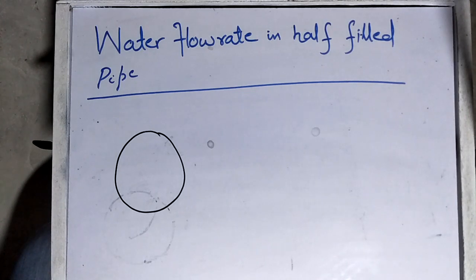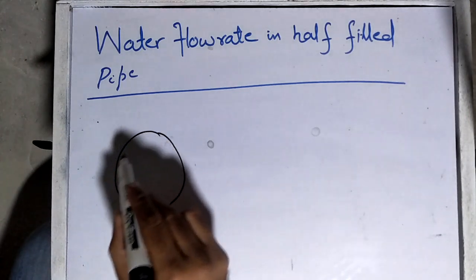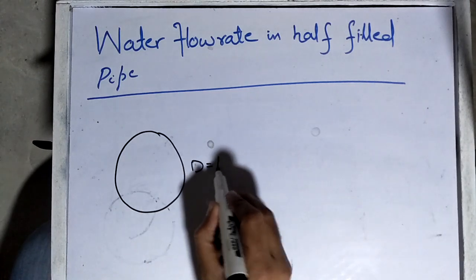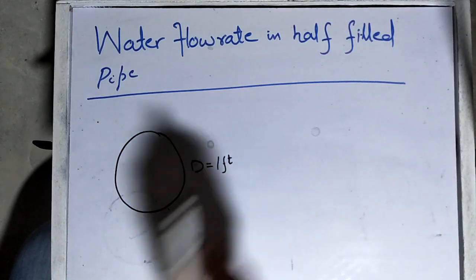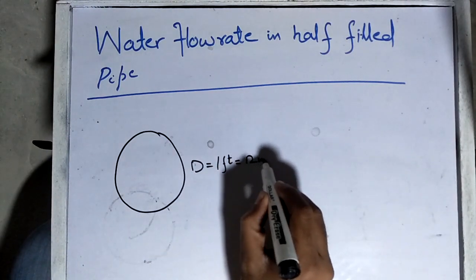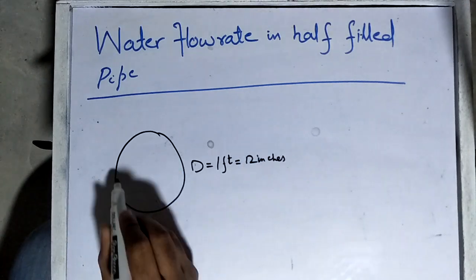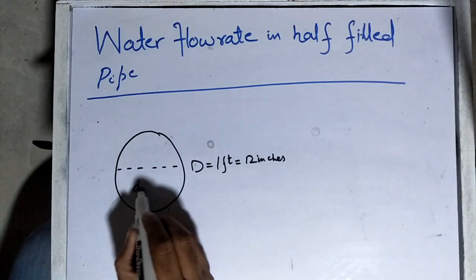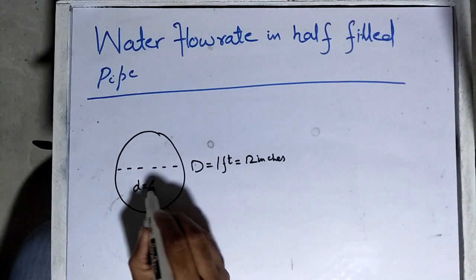For example, I have this pipeline with a diameter of 1 foot, or 12 inches, and water is filled to half of its level, which means 6 inches.